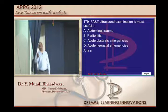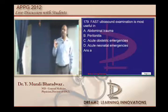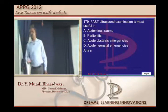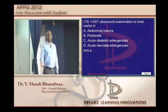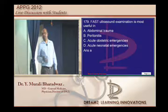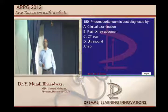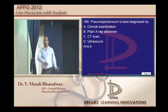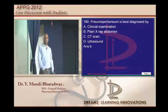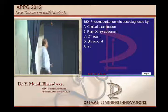FAST — Focused Abdominal Sonographic Assessment for Trauma — is used in emergency abdominal trauma, as we have discussed in the Sunday exam. For pneumoperitoneum, a plain radiograph is sufficient — the examiner didn't ask about lateral decubitus views specifically.